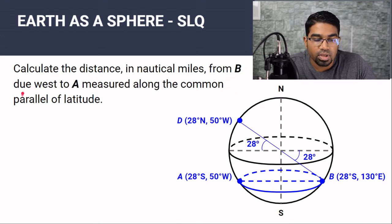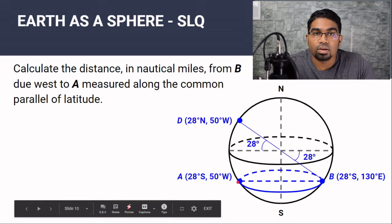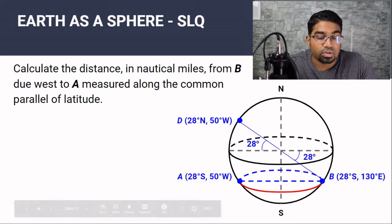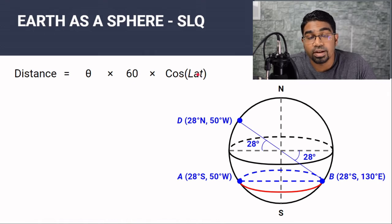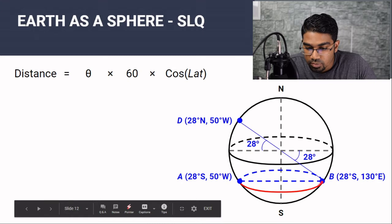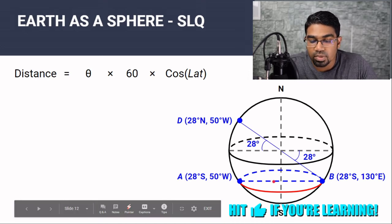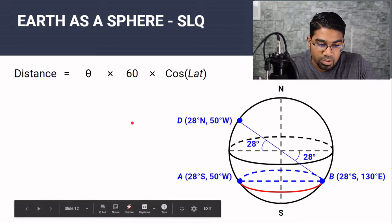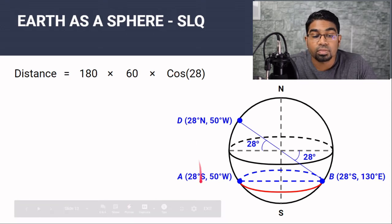Calculate the distance in nautical miles from B due west to A, measured along the common parallel of latitude. When dealing with distances along the same latitude, we use the formula: distance = θ × 60 × cos(latitude), where θ is the difference in longitude between the two points. Since the two points are on opposite sides of the Earth, the difference in longitude is 180 degrees.